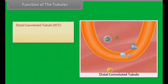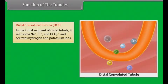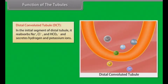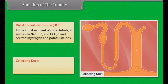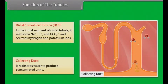Distal Convoluted Tubule. In the initial segment of the distal tubule, it reabsorbs Na+, Cl- and HCO3-, and secretes hydrogen and potassium ions. The collecting duct reabsorbs water to produce concentrated urine.